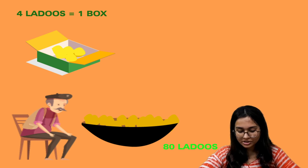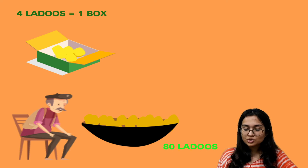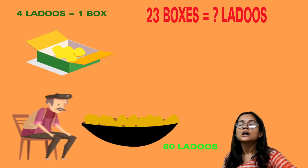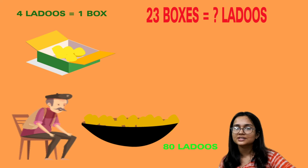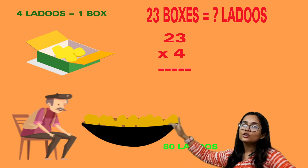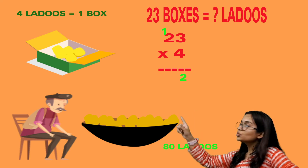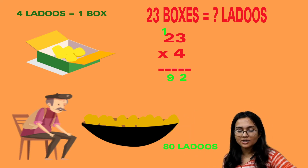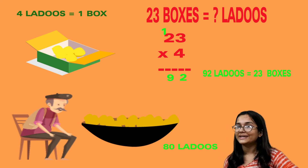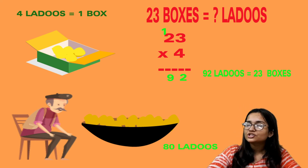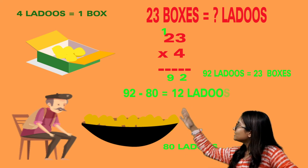Then we have Gangu sweets. Gangu is making sweets for Eid and has made a tray of 80 laddus. He needs to pack 4 laddus in a box and needs 23 small boxes — are the sweets enough? If we multiply 23 by 4: 4 into 3 gives 12, write 2 and carry 1; 4 into 2 gives 8, plus 1 is 9. So 92 laddus are needed for 23 boxes. But only 80 laddus are made, so they are not enough. We subtract 80 from 92, and 12 more laddus are needed.